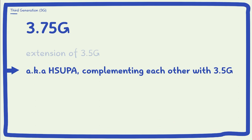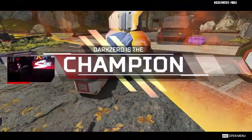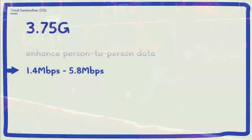HSUPA is directly related to HSDPA and both are complementary to one another. HSUPA enhanced advanced person-to-person data applications with higher and symmetric data rates, such as mobile email and real-time person-to-person gaming, with speeds ranging from 1.4 Mbps to 5.8 Mbps.